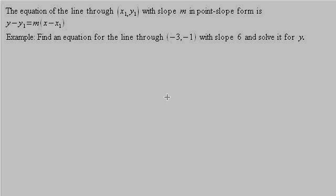All right, let's talk about point-slope form of a line. The equation of a line through the point x1, y1 with slope m in point-slope form is y minus y1 equals m times x minus x1.